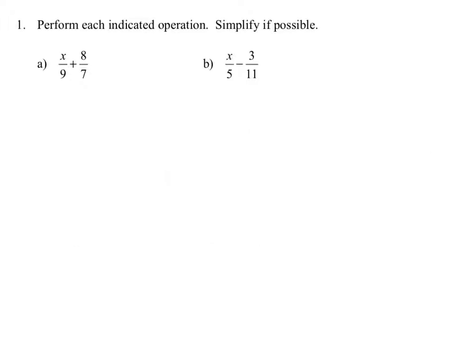To add x over 9 plus 8 over 7, you want to find the least common denominator. Looking at the denominators of 9 and 7, the least common denominator is 63. So you want to write the equivalent rational expressions for x over 9 and 8 over 7 to get a common denominator. In order to make 9 equal 63, we multiply the top and the bottom by 7. So x over 9 is the same thing as 7x over 63.